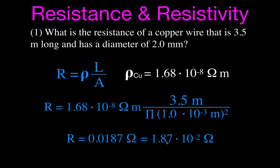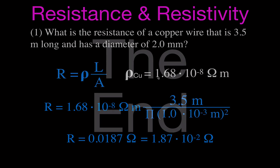So there you go. We went over an explanation for resistance and resistivity, and we worked through a simple problem using our equation to calculate the resistance of a wire that is 3.5 meters long with a diameter of 2 millimeters, given that the resistivity of copper is 1.68 × 10⁻⁸ ohm·meters. Thank you very much for watching. Please subscribe to my channel, give this video a thumbs up, leave a positive comment, and share this video with your friends. Thanks for watching — see you in the next one.